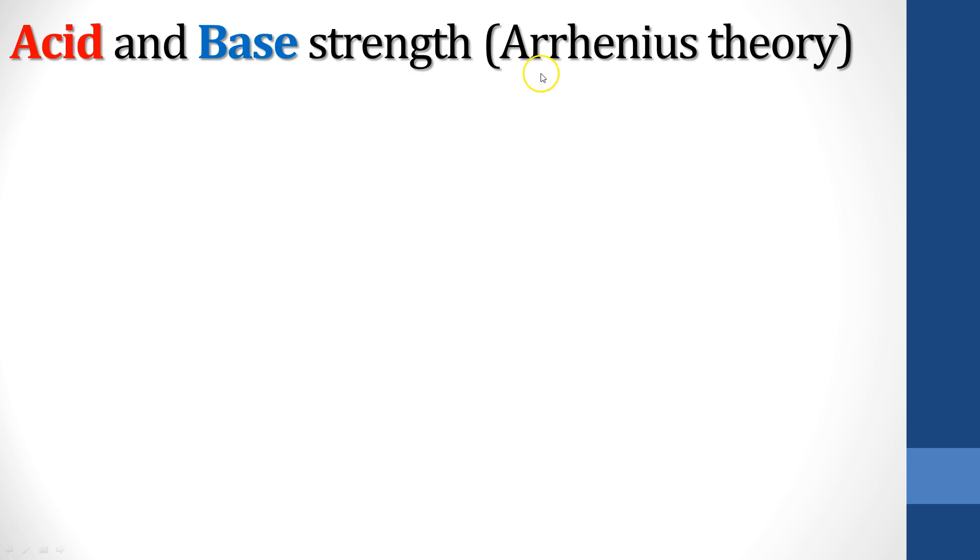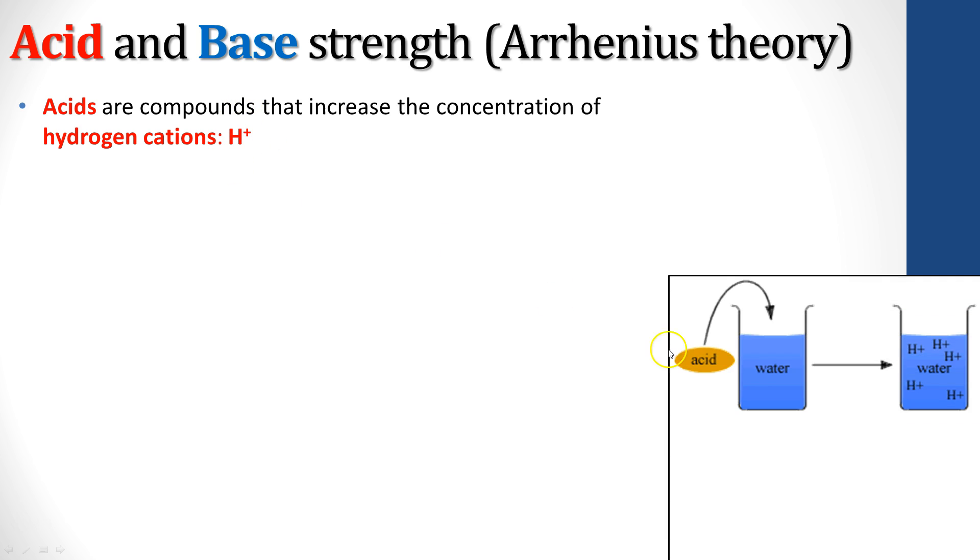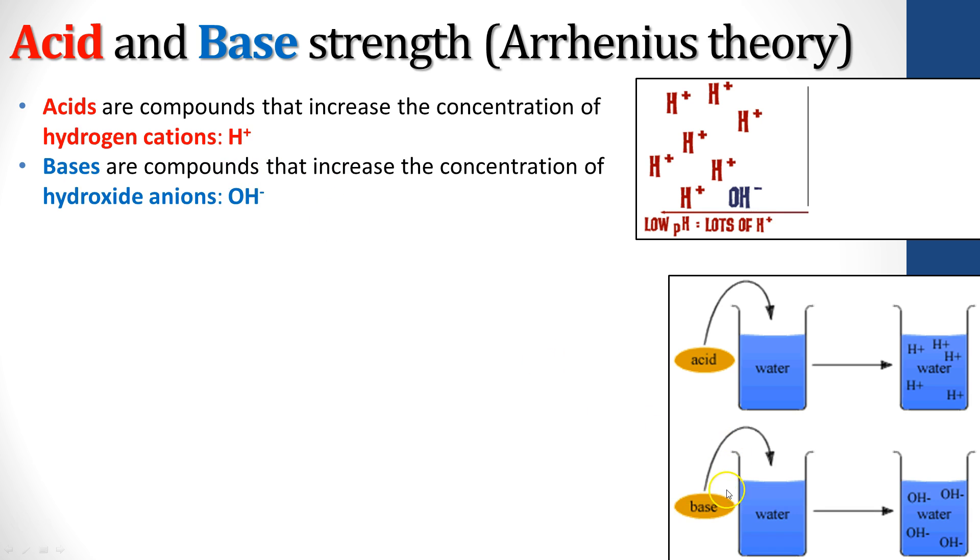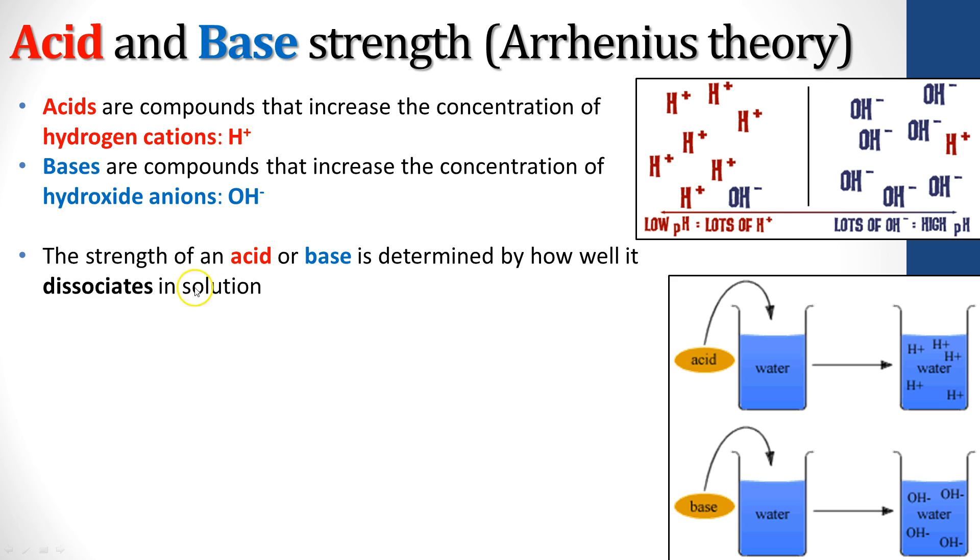So acid and base strength, as we go with the Arrhenius theory, which we'll talk about later, acids are compounds that are going to increase the concentration of hydrogen cations. So just think acids and think these protons, this hydrogen cation. So you add an acid to water, you get a whole bunch of these hydrogen cations out there. Low pH, we have an acid, lots of those. Base, on the other hand, is going to be something that increases the concentration of hydroxide anions. You add a base to water, you get all these OH minuses in there. A high pH, lots of OH minuses in solution.